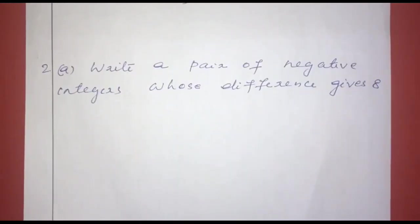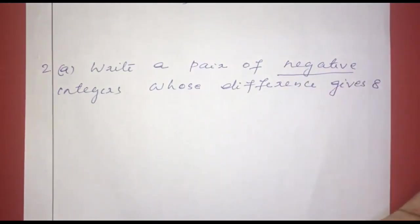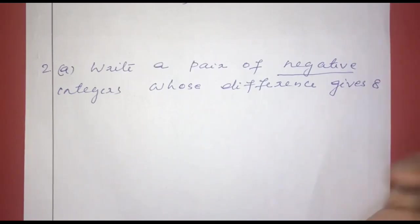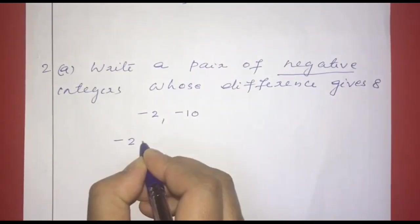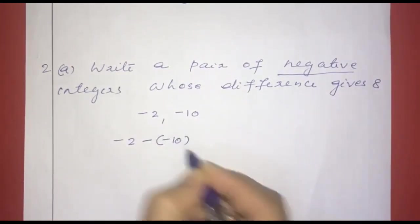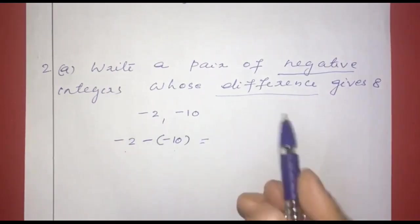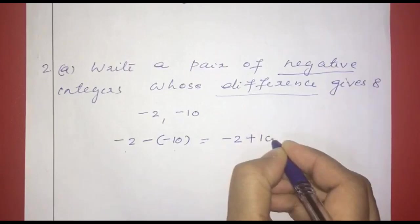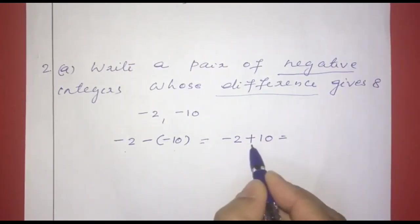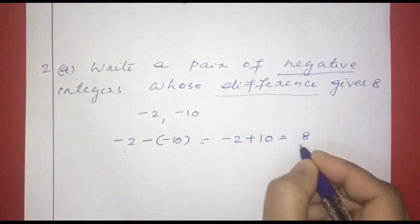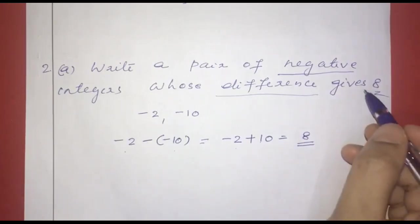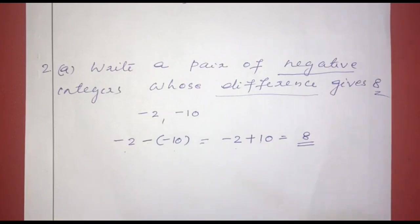Second question: write a pair of negative integers whose difference gives 8. We need negative integers only. Take negative 2 and negative 10. Negative 2 minus negative 10 equals negative 2 plus positive 10. Opposite signs: 10 minus 2 equals 8. So the difference is 8. The pair is negative 2 and negative 10.